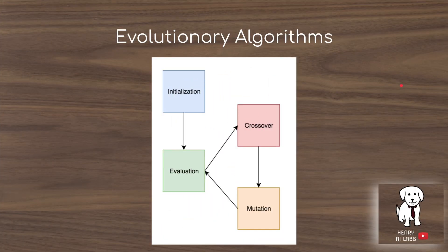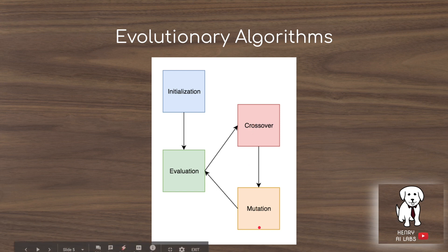The Genetic CNN is an evolutionary algorithm used to design neural architectures. The general structure involves initializing the population members, evaluating them according to a fitness function, performing crossover — sometimes omitted in some neuroevolution algorithms — and then mutation. This cycle repeats for a given number of iterations until the best neural architecture for the problem is found.